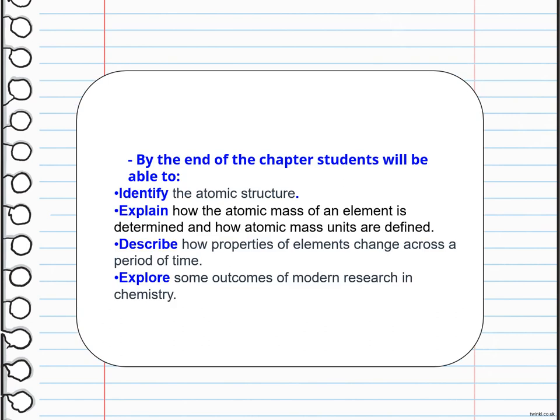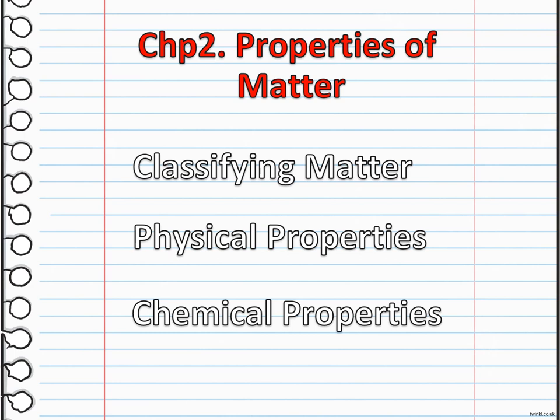By the end of the unit entirely, you will be able to identify the atomic structure, how the atomic mass of an element is determined, and how atomic mass units are defined. You are going to be able to describe how properties of elements change across a period, and you're going to explore some outcomes of modern research in chemistry.